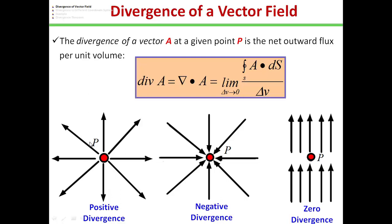For clarification of divergence, here I have taken three examples. In the first case, a positive charge is placed within the closed surface. If a positive charge is there, the electric field lines will be in the outward direction. So the total flux will be in the outward direction, and if we calculate the divergence within the closed surface, we will find positive divergence. In the second case, if a negative charge is placed within the closed surface, the electric field lines will be in the inward direction. In that case, flux will be negative, and we will find negative divergence.